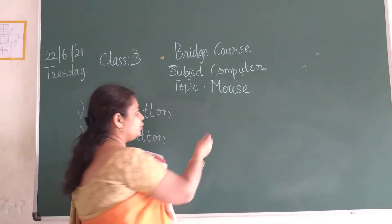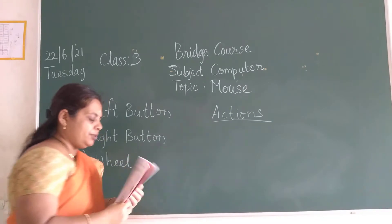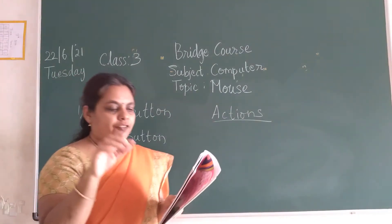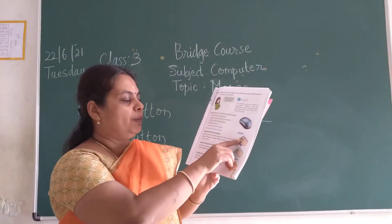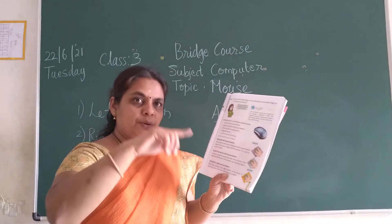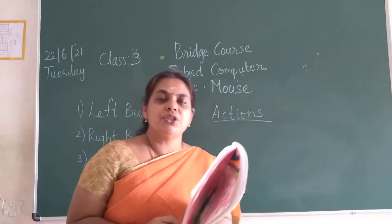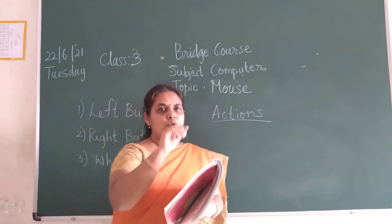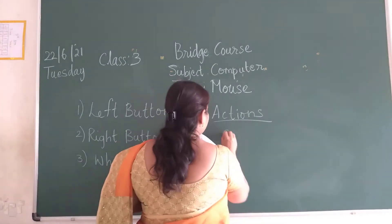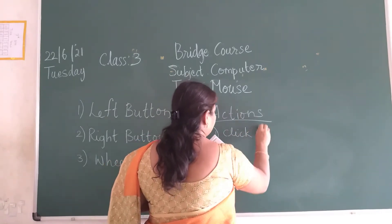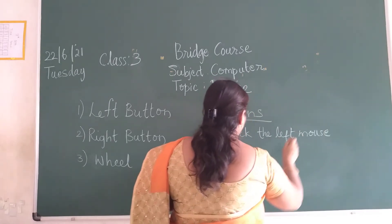What are the actions we can do with the mouse children? There are 5 actions we are going to do with the mouse. The first one: once you click and release the left mouse button, it is used to select an object. So many files and folders will be there — to select them, we click the left mouse button and the object will be selected.